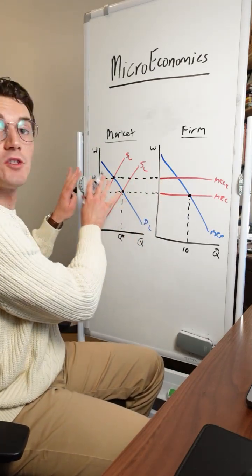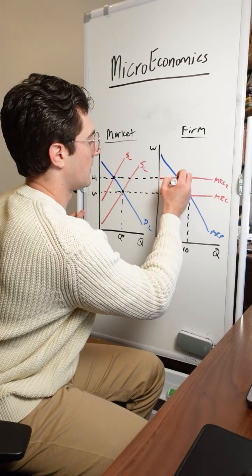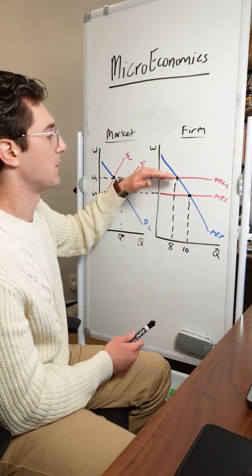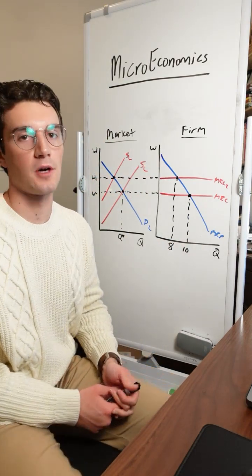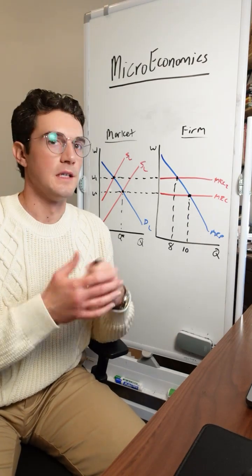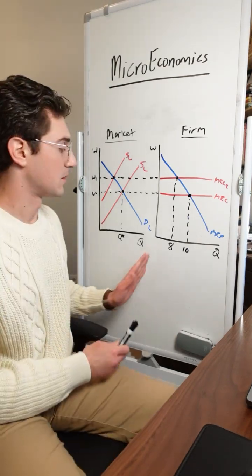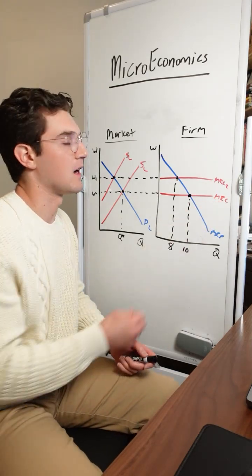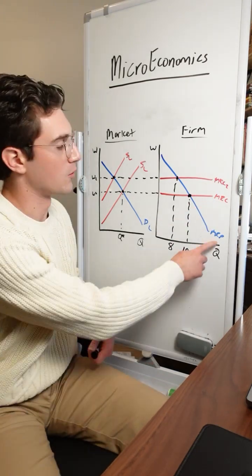So now this individual firm, due to this shift in the labor market, is going to be paying their workers more and in turn is going to be hiring less workers. Because now we lie higher up on their marginal revenue product curve. In other words, firms are going, all right, now I got to pay workers more, and in turn, I got to cut back my output. Because I'm not going to hire workers past the point where they're costing me marginal resource cost more money than they're bringing in marginal revenue product.